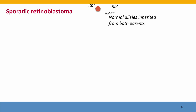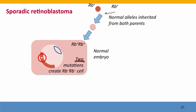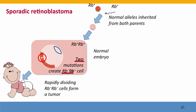In sporadic retinoblastoma, or sporadic occurrences of many other cancers that arise from inactivation of a tumor suppressor gene, the child begins with gametes that both carry normal alleles, so the embryo is genetically normal. But two mutations occur during embryonic development in the retinal cell — they have to occur in the same cell lineage to produce one cell that has two mutations. This cell then forms rapidly dividing cells that lack retinoblastoma protein and forms a tumor.